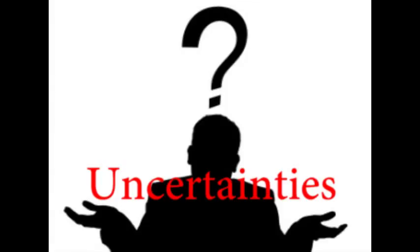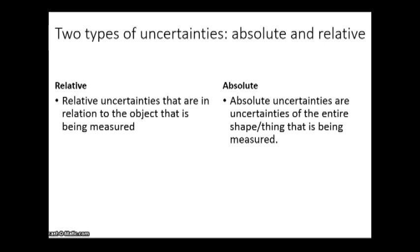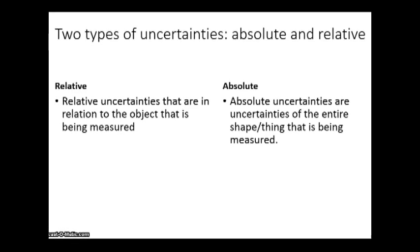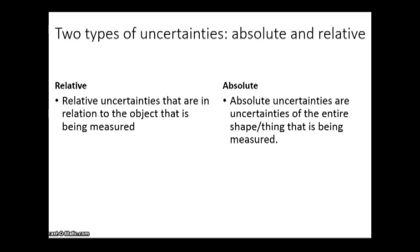What are uncertainties? There are two types of uncertainties: the absolute uncertainty and the relative uncertainty. Relative uncertainties are in relation to the object being measured, while absolute uncertainties are uncertainties of the entire shape being measured.